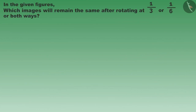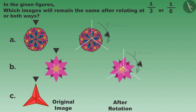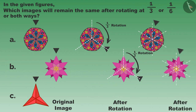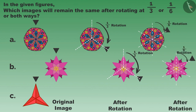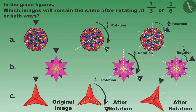Look at these images and find out which images will remain the same after one-third rotation, one-sixth rotation, or both. As you can see, figures A and B are not changing after one-third rotation and one-sixth rotation. Figure C does not change after one-third rotation, but after one-sixth rotation it will change and look different.